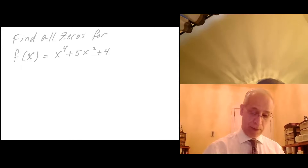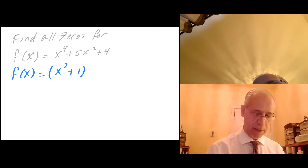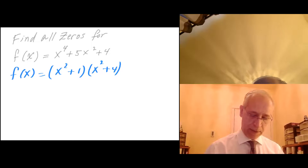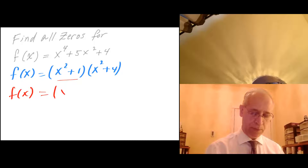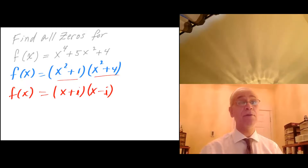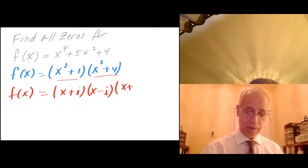I can go ahead and factor this — this is one of the easier ones. f of x equals x squared plus 1 times x squared plus 4. And now I can factor further: f of x equals, here I have sum of two squares, so x plus i, x minus i, and here I have sum of two squares again, so x plus 2i and x minus 2i.